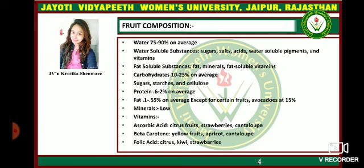Minerals are low in fruits. Vitamins include ascorbic acid found in citrus fruits, strawberries, and cantaloupe; beta-carotene found in yellow fruits, apricots, and cantaloupe; and folic acid found in citrus, kiwi, and strawberries.